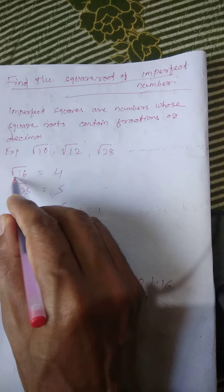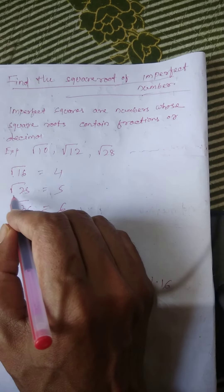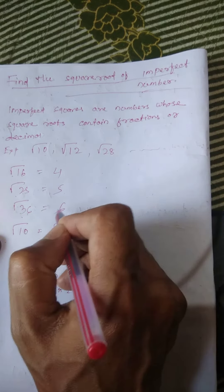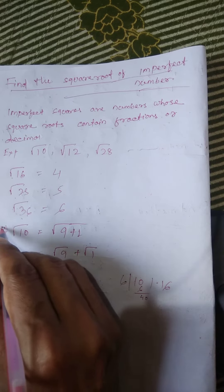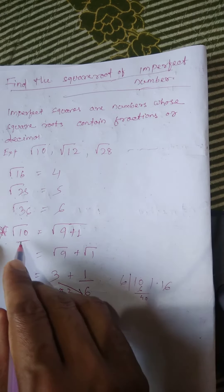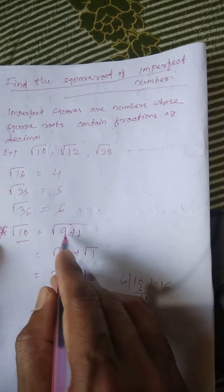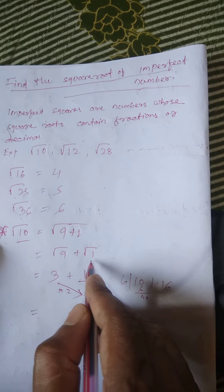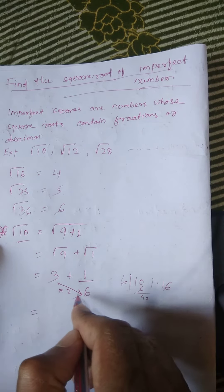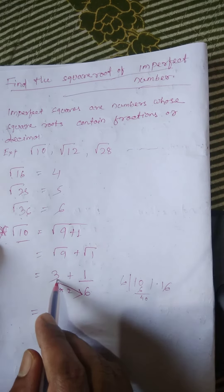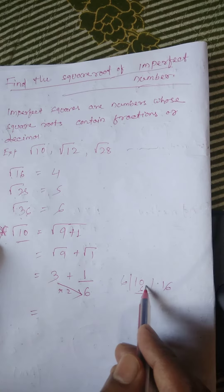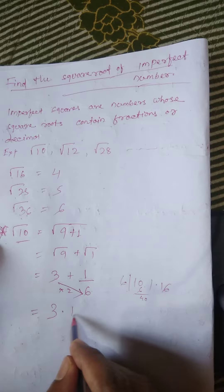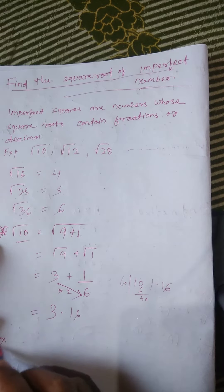To example, root 10. Root 10, the imperfect number 10, we write as 9 plus 1. Root over 9 plus 1, root of 9 is 3, root 1 value is 1 by 6. 3 double by 3 into 2 is 6, so 1 by 6 gives 3 point 1 6. Answer.